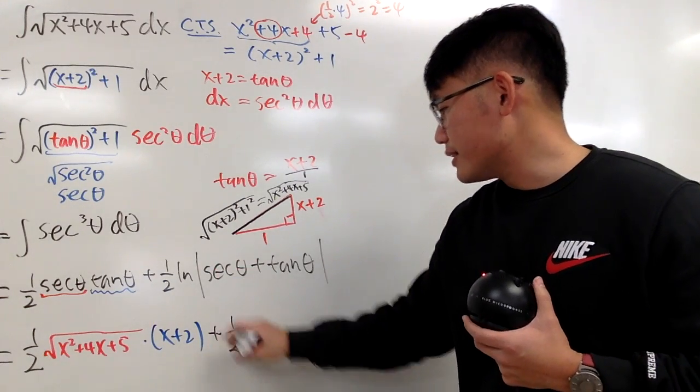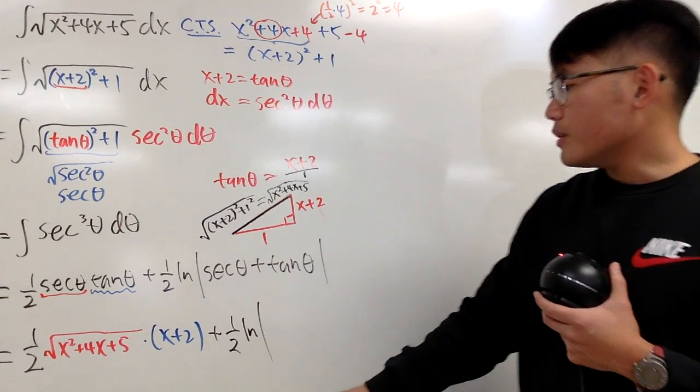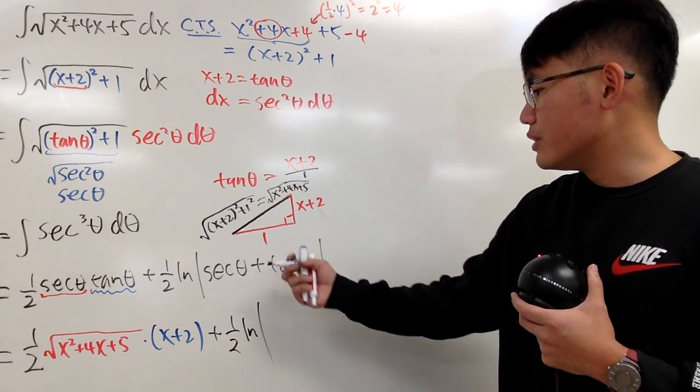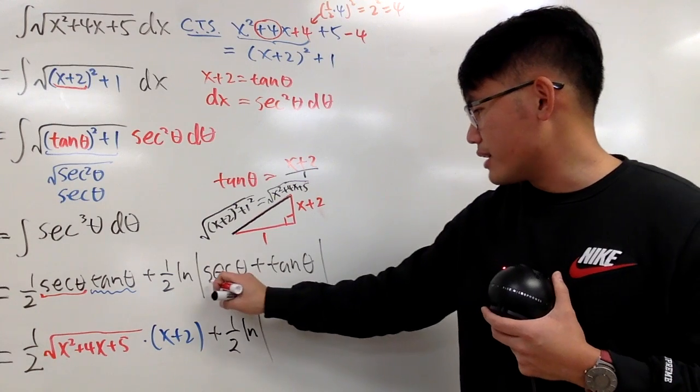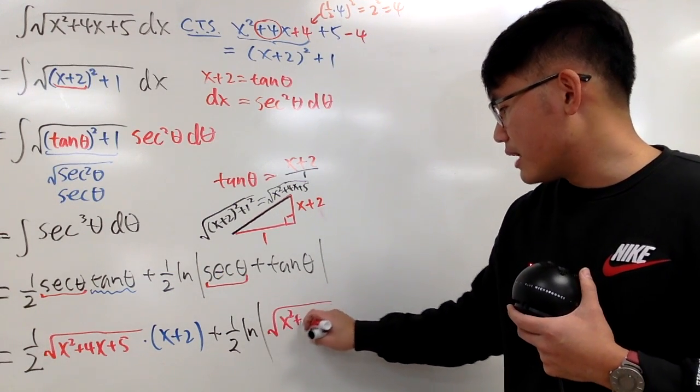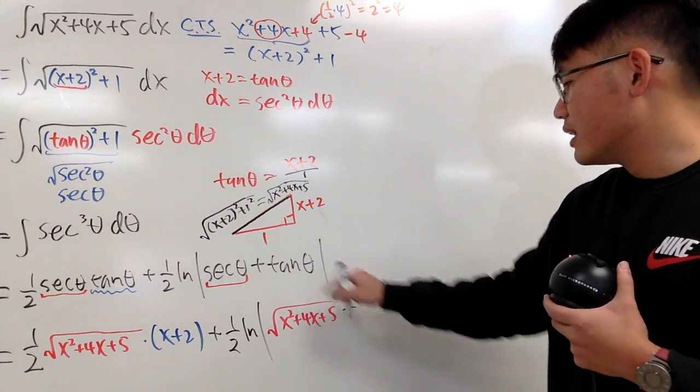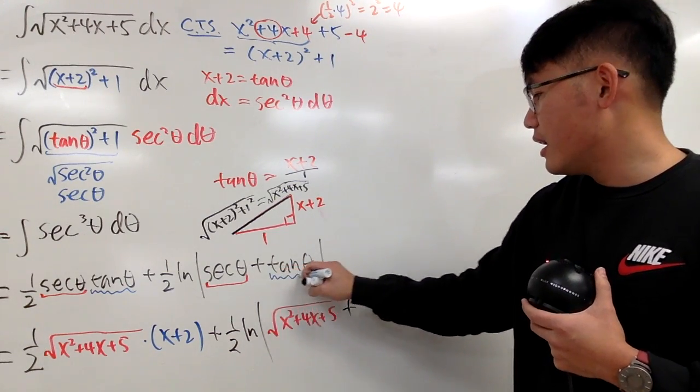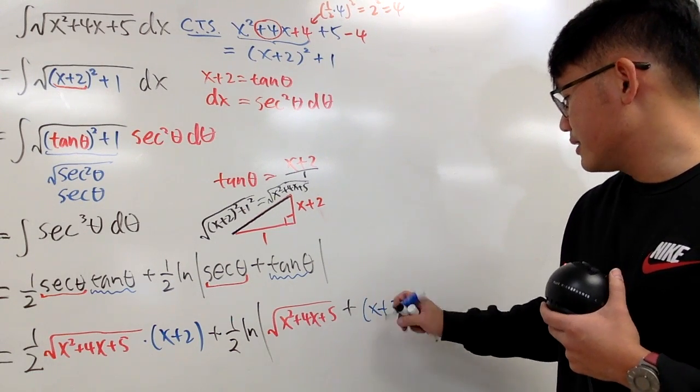You pretty much do the same for the rest. 1 half, natural log, absolute value. And you have the secant theta, which is this over that again. So I'll put this down in red again. And we have the square root of x squared plus 4x plus 5. And then you add the tangent theta, which is, again, x plus 2. That's all. Like this.